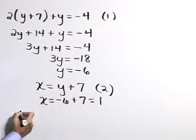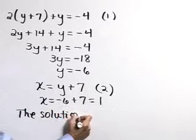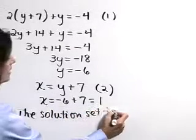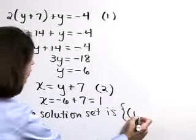So let's say then that the solution set is x is equal to 1, y is equal to negative 6.